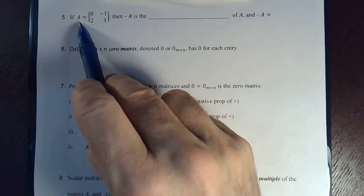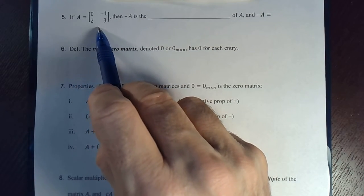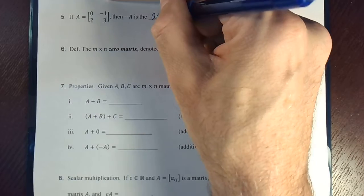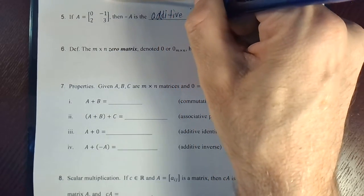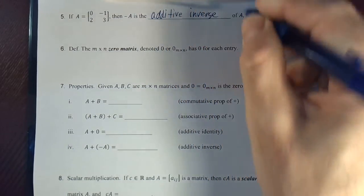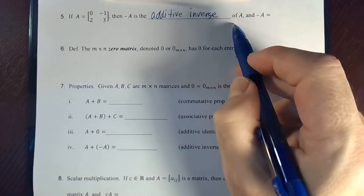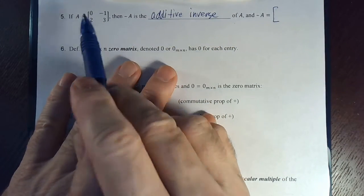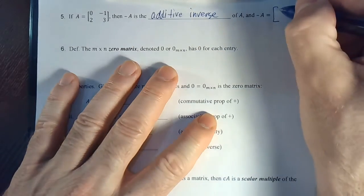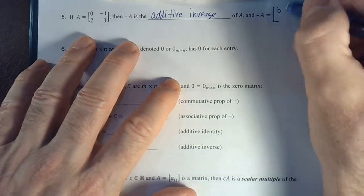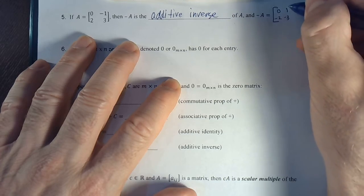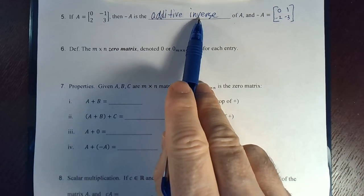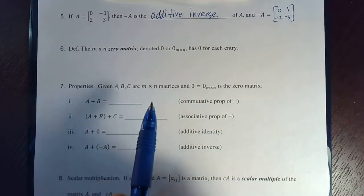Well, if we have a matrix A, this is a 2x2 matrix, but it works for any matrix, then negative A is called the additive inverse of the matrix A. And for this example, negative A would be simply taking the negative or opposite of each one of the four numbers in this matrix. So it would be a 0 and a positive 1, and then a negative 2, negative 3 in the second row. Okay, so once again, every matrix has an additive inverse. You simply negate all of the elements in the matrix.